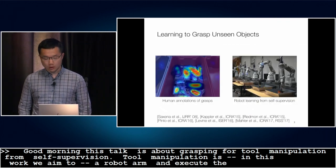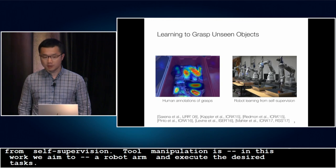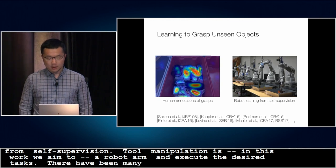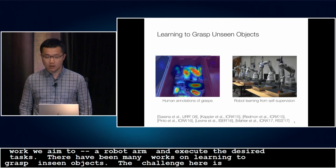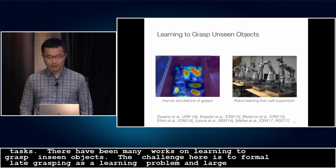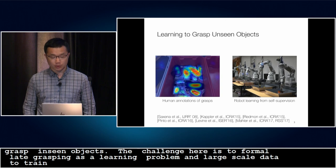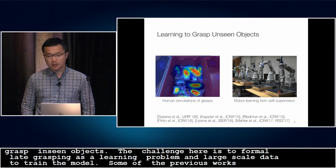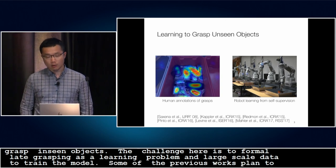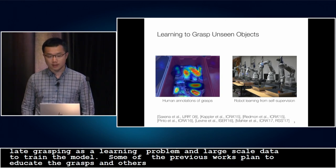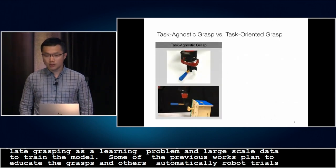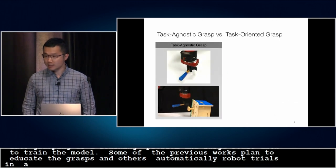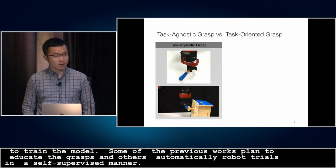There have been many recent works on learning to grasp unseen objects. The main challenge here is to formulate grasping as a learning problem and to collect large-scale data to train the model. Some previous works ask humans to annotate the ground truth positions of the grasps, while others automatically generate robot trials in a self-supervised manner. However, most previous learning-based grasping models do not consider the task constraints.